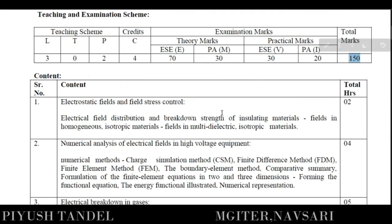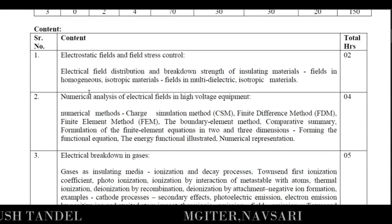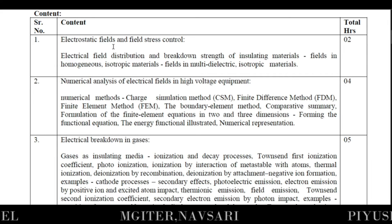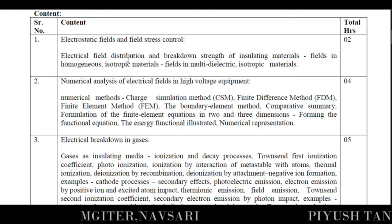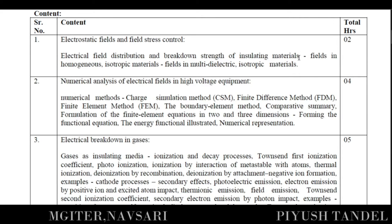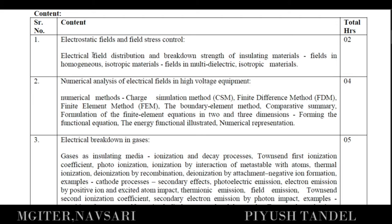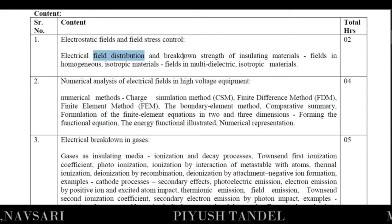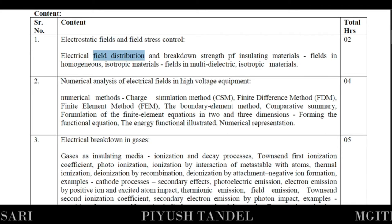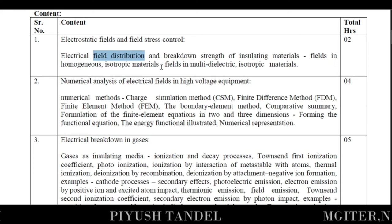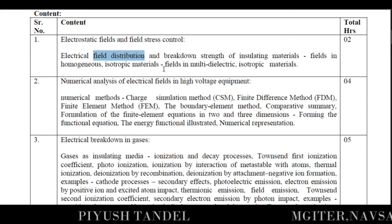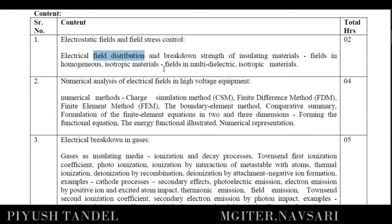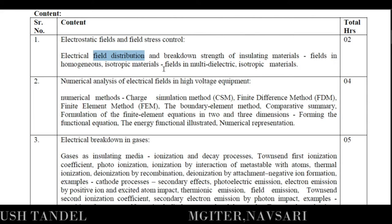Now we will see the chapter-wise content. Chapter one is electrostatic field and field stress control, which consumes two hours, covering electric field distribution and breakdown strength of insulating materials. This includes field in homogeneous isotropic materials — how the electric field distribution behaves in different materials — and field in multi-dielectric isotropic materials, which are also covered in chapter one.